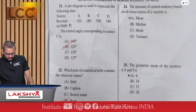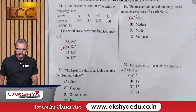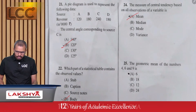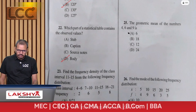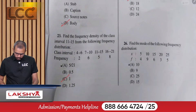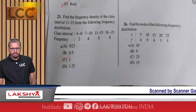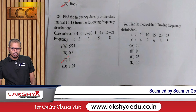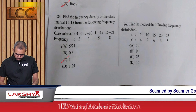Question 24: Which measure of central tendency is based on all observations — option A. Question 25: The geometric mean of 4, 6, 9 — option A. Question 26: Find the mode from the frequency distribution with observations 5, 10, 15, 20, 25 and frequencies 4, 9, 6, 3, 5 — option A.